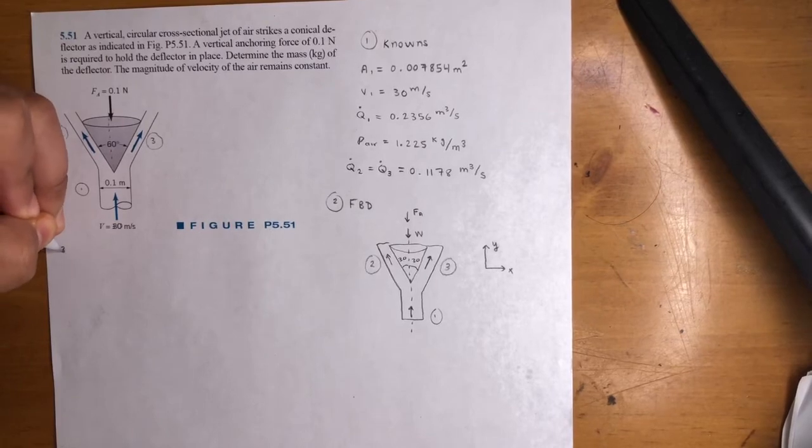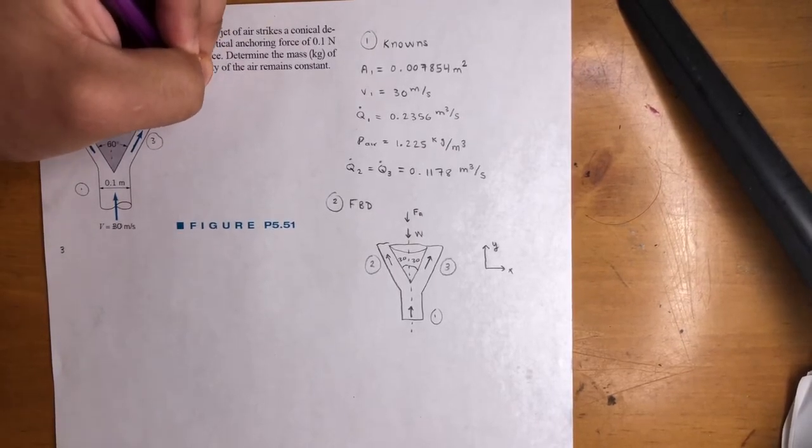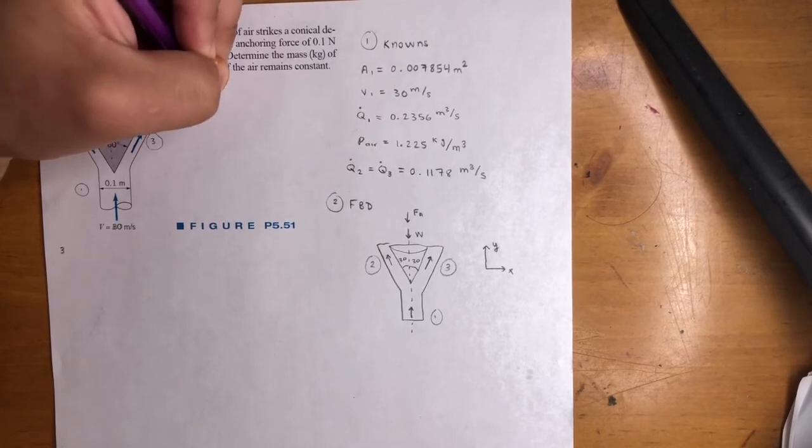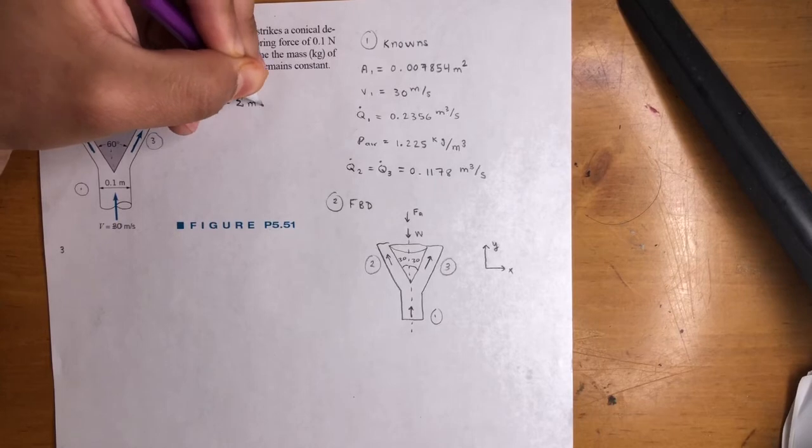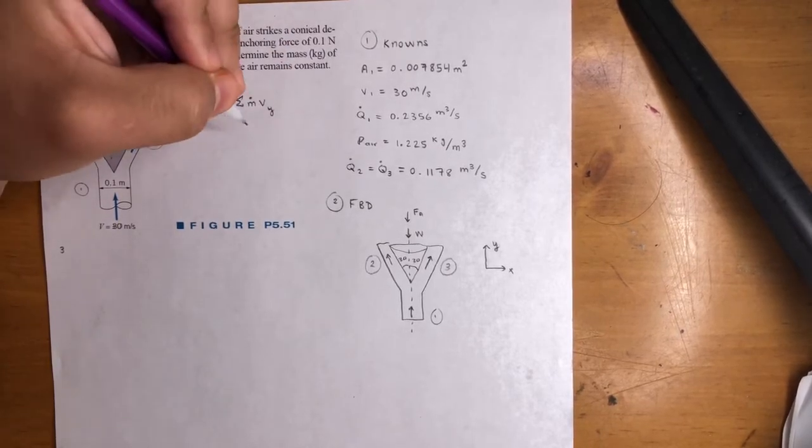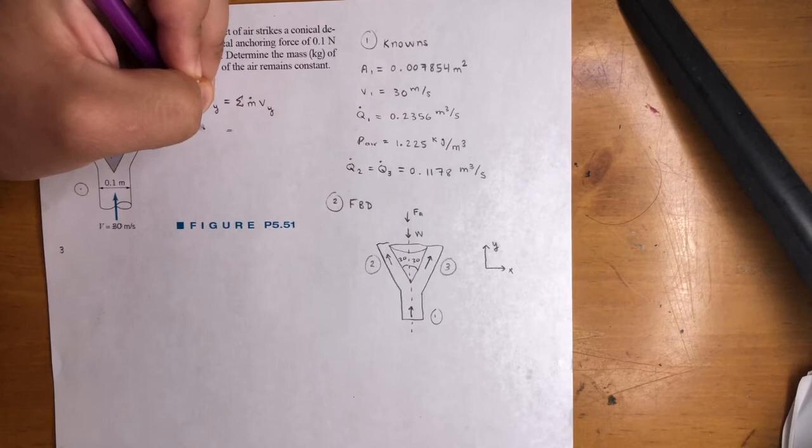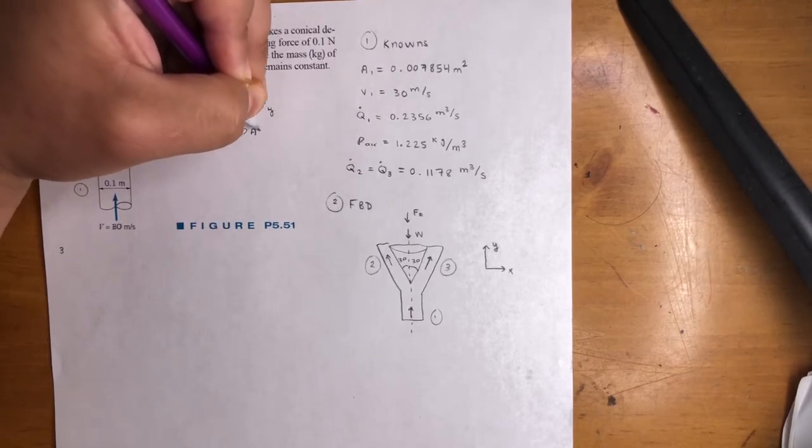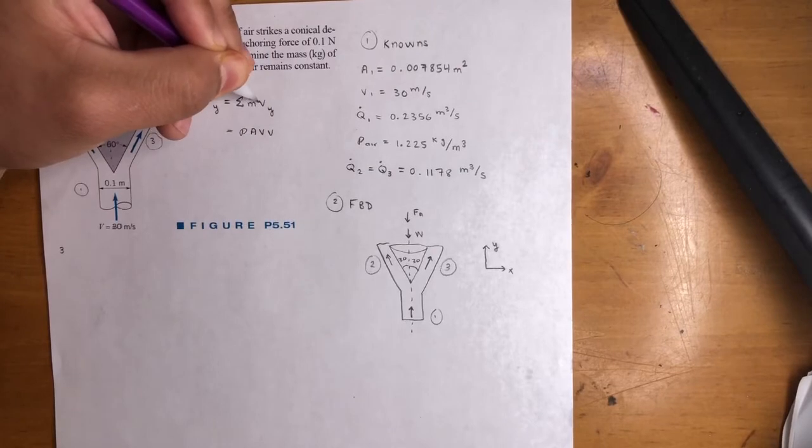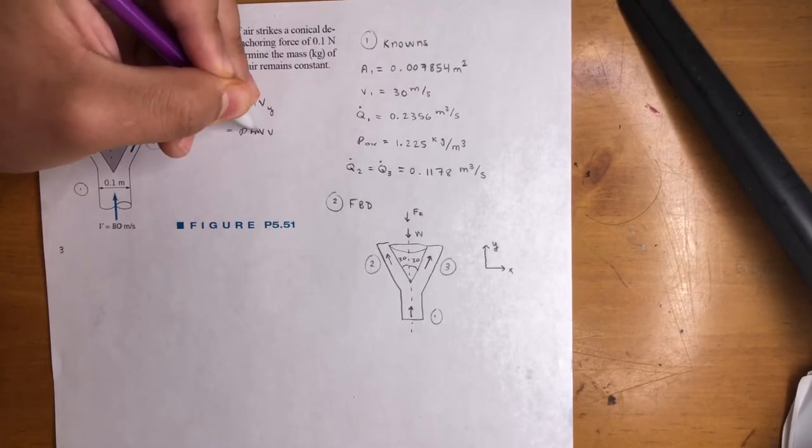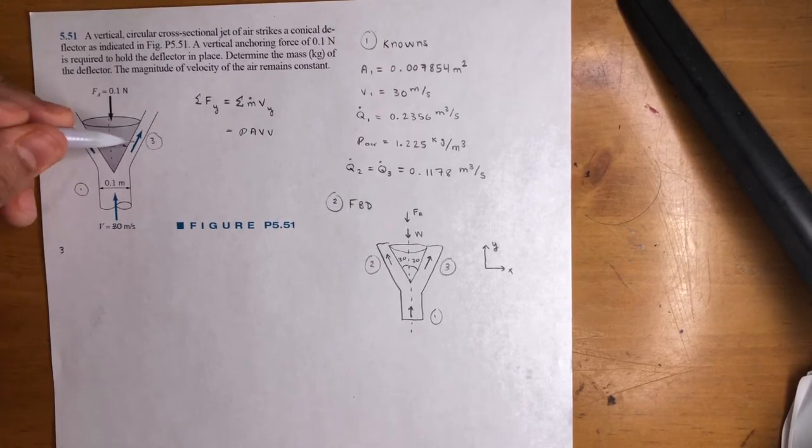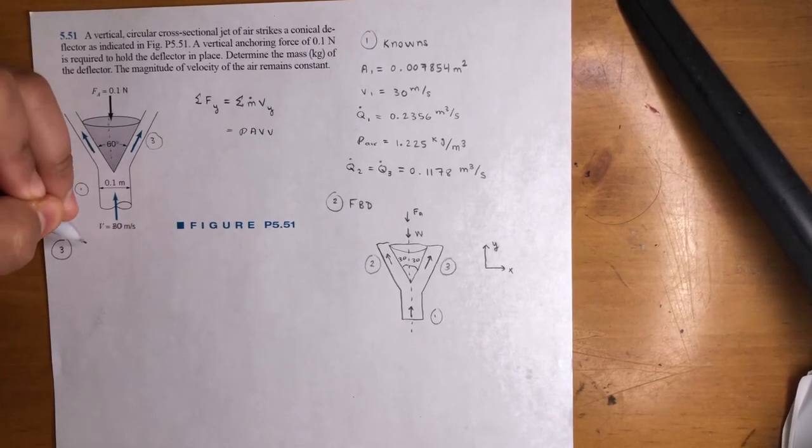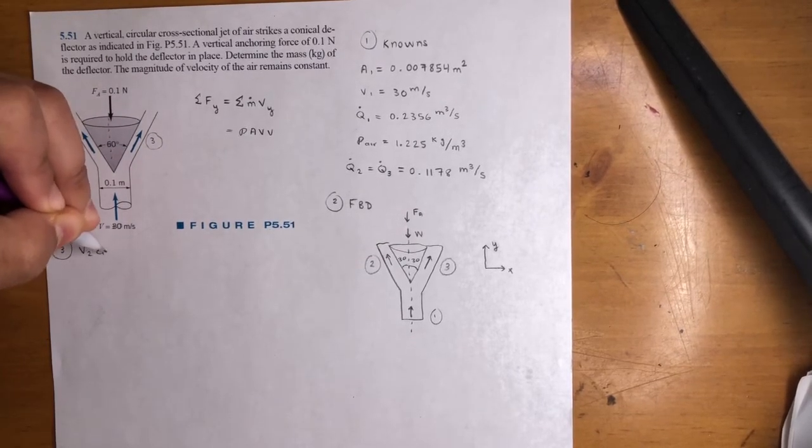So next step is, our main goal is to find the sum of the forces in the Y direction is equal to the sum of the linear momentum in the Y direction. So, in other words, you want to find all the forces is equal to all the rho*A*V's times V's. This is rho*A*V times another V. So rho*A*V, V. So we can't do that if we don't have V here, we don't have the area here, we don't have V here, we don't have the area here. So step three. Let's go ahead and find V2 and V3.